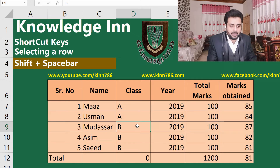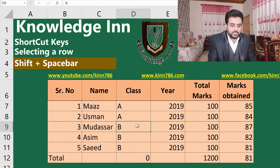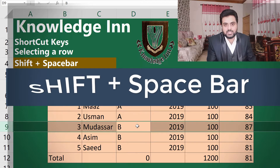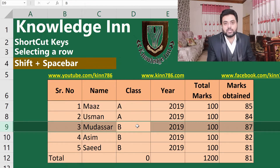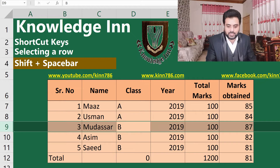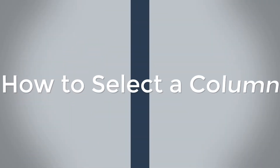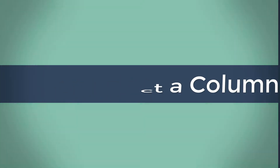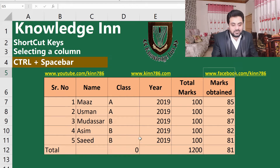First of all, we will see how to select a row at cell D9. To select a row, you simply have to press Shift and Spacebar — it will select the whole row. Let's move to our next shortcut key, which is to select a column.